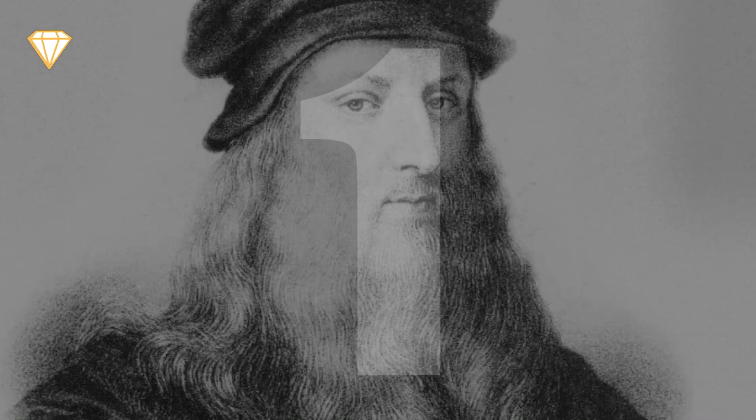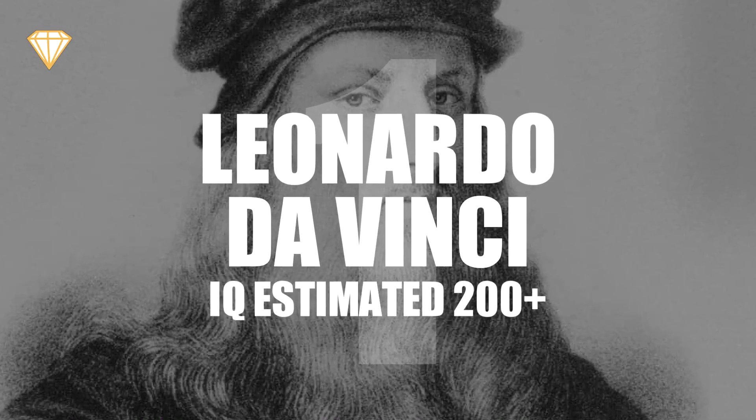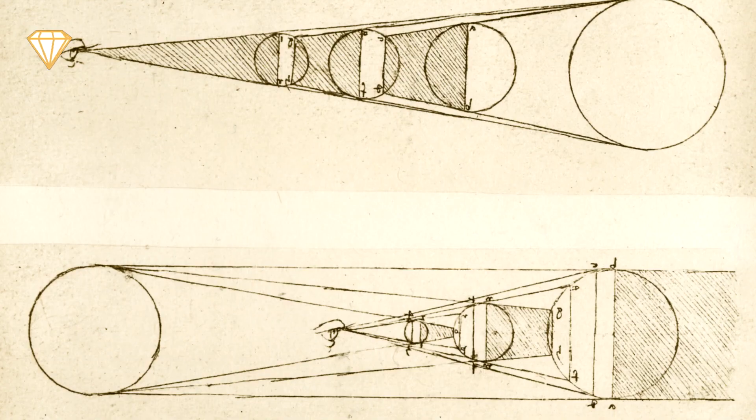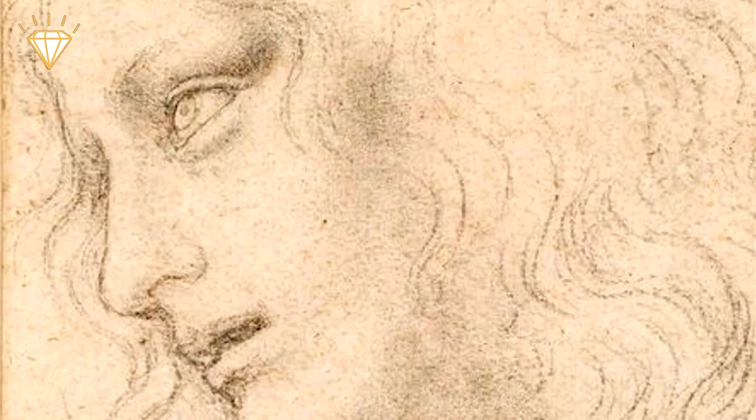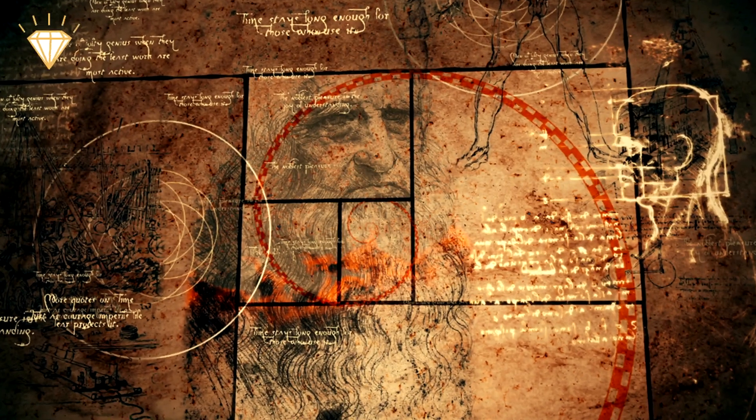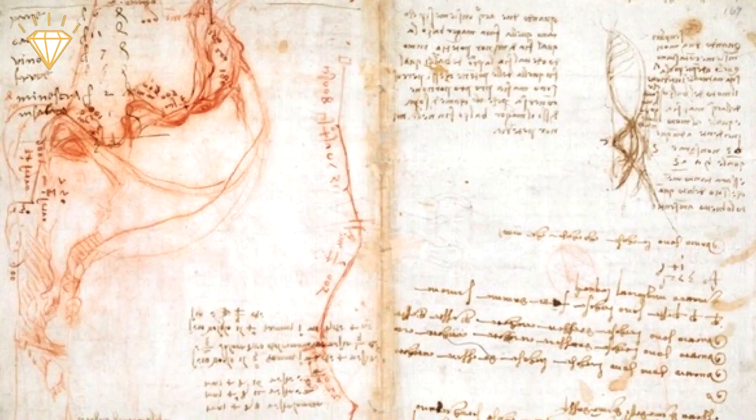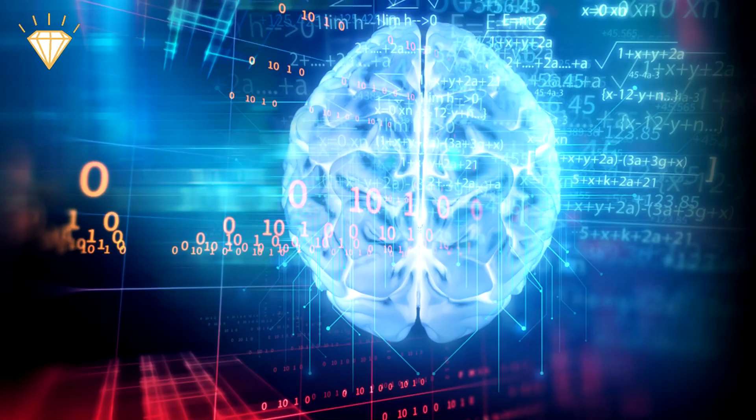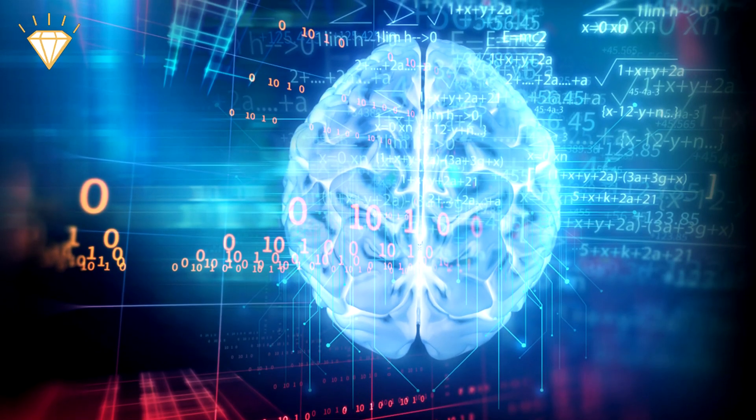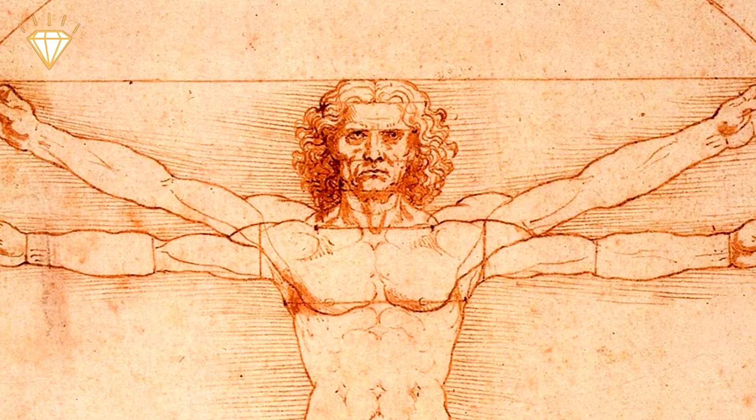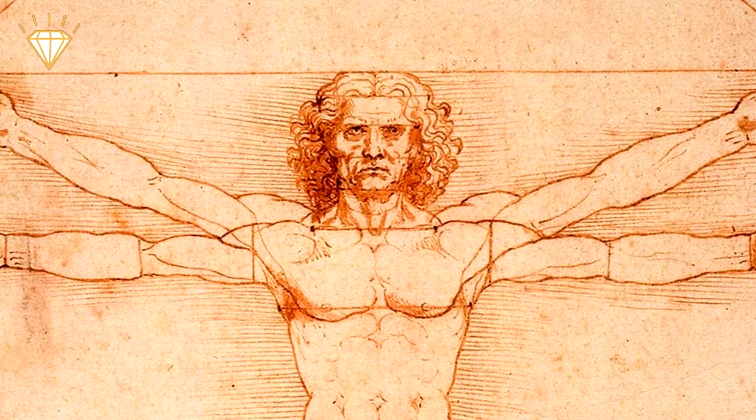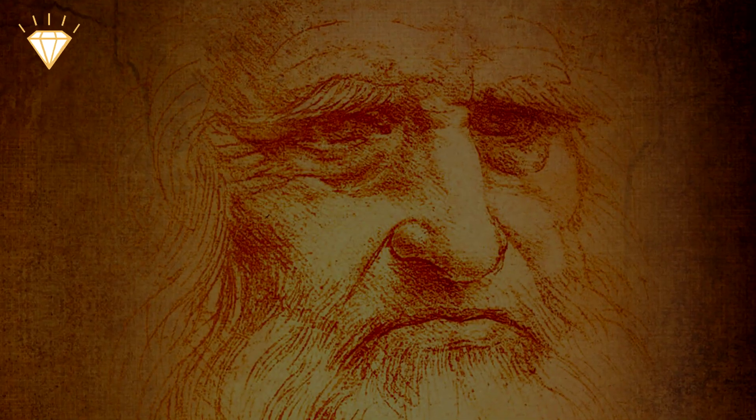At number 1, Leonardo da Vinci. Inventor, astronomer, engineer, botanist, anatomist and artist, Leonardo's thirst for knowledge was unquenchable, his curiosity insatiable and his inventiveness boundless. These qualities are common in most highly intelligent people, but the fact that Leonardo was proficient in so many different fields sets him apart from the rest.